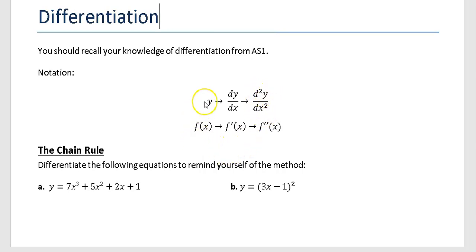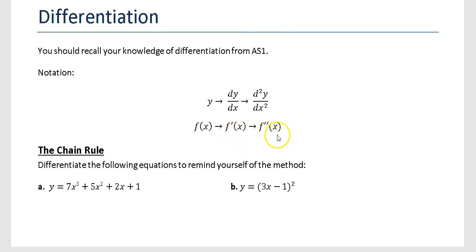Or if instead of writing your y as y you write it as f of x, meaning a function of x, then if you differentiate you go to f dash of x and if you differentiate again you go to f double dash of x. One dash means f of x has been differentiated once and the double dash means f of x has been differentiated twice.